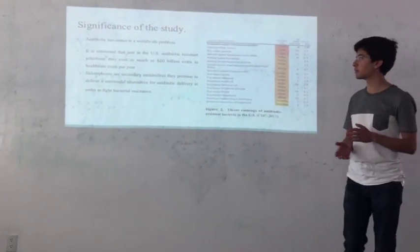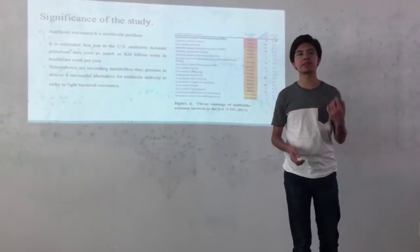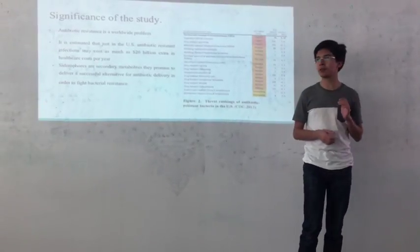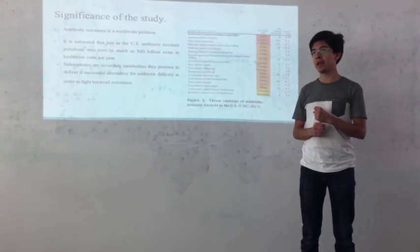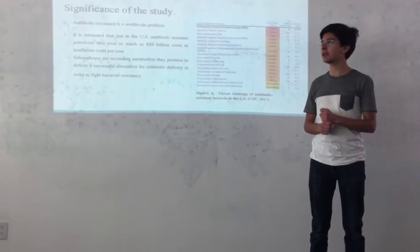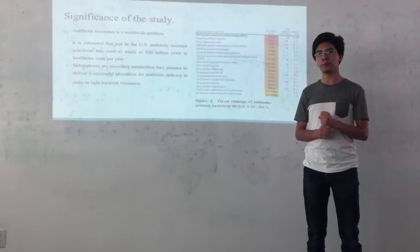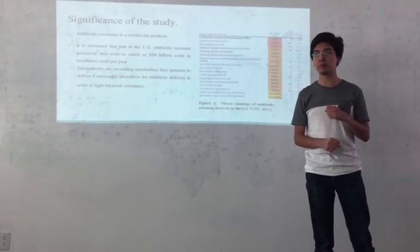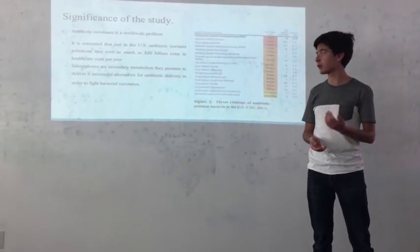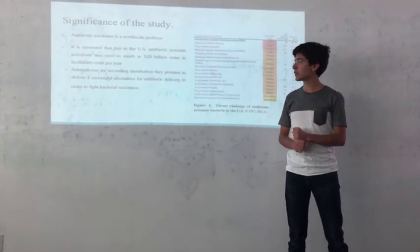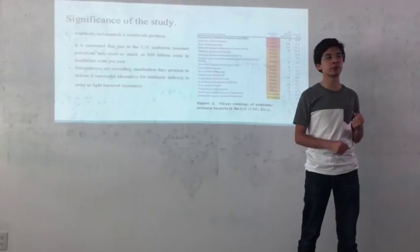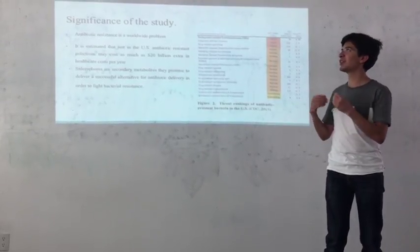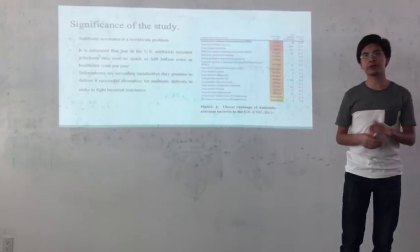This study is very important because, as we previously mentioned, antibiotic resistance is a worldwide problem affecting people everywhere. Just in the U.S., it is estimated that antibiotic resistance infections may cost as much as 20 billion dollars extra in healthcare costs per year. It is calculated that 64% of patients infected with methicillin-resistant Staphylococcus aureus are more likely to die than patients without the resistant form of the infection. Siderophores are secondary metabolites that promise to deliver a successful alternative for traditional antibiotics in order to fight bacteria.